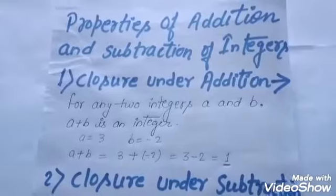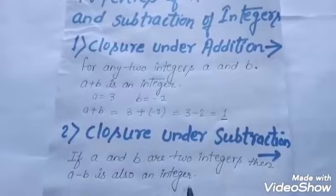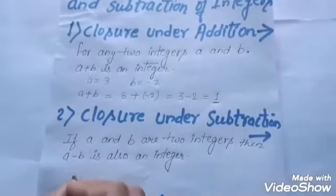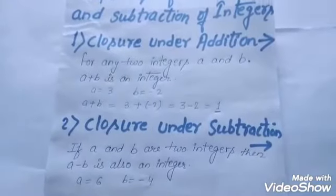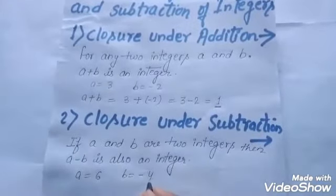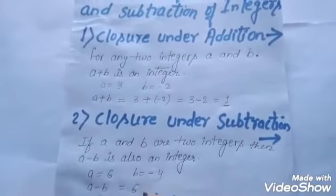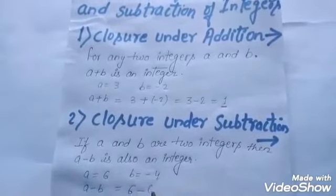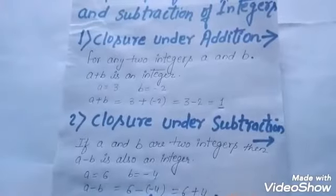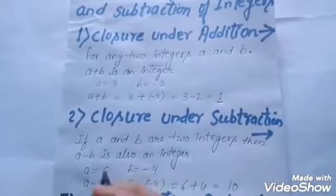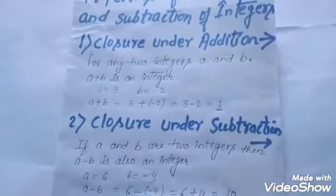If a and b are integers, then a minus b is also an integer. If a is six and b is minus four, both are integers. We find a minus b: six minus minus four. Minus minus is plus, so six plus four equals ten. Six and minus four are integers, and ten is also an integer.